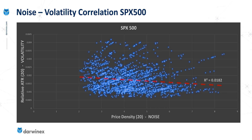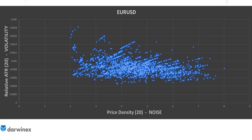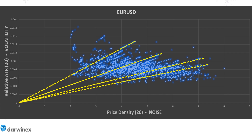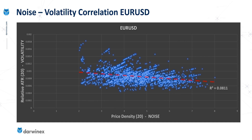Let's now turn our attention to EURUSD and take a look at the data. We see exactly the same behaviour — very dominant lines in the data showing that correlated behaviour. And once again, if you extend them, they go directly to the origin. But just like with the S&P 500, the overall correlation here between the data is negative.